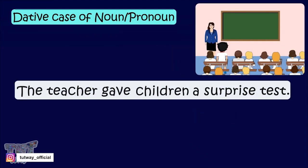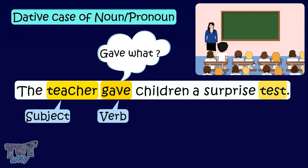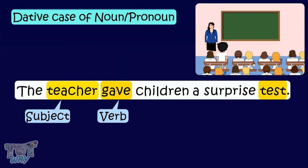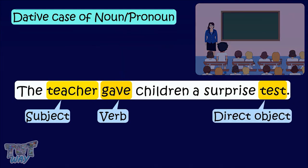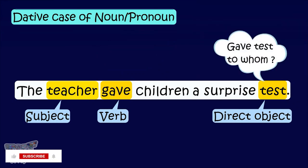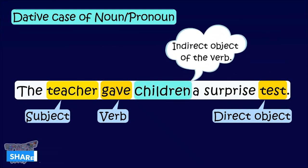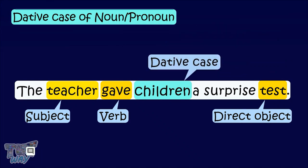The teacher gave children a surprise test. 'Teacher' is the subject, 'gave' is the verb, and gave what? Gave a test. So 'test' is the direct object. And gave the test to whom? To the children. So 'children' is an indirect object of the verb and will be said to be in the dative case.